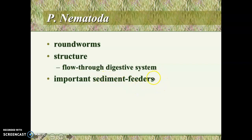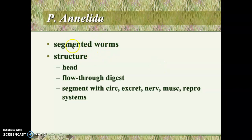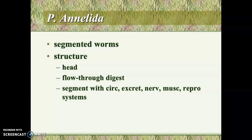Nematodes are very important sediment feeders. We think they've been around for a long time because, even though it's hard to preserve a soft organism as a fossil, you can see evidence of them burrowing through sediment and consuming it when you look at the fossil record. Next is the third and final type of worm we'll mention: the segmented worms. An earthworm is a segmented worm. These have a noticeable head, a flow-through digestive system, and each segment has its own circulatory, excretory, nervous, muscular, and reproductive systems. You can see they're getting progressively more complicated than the other two types of worms.